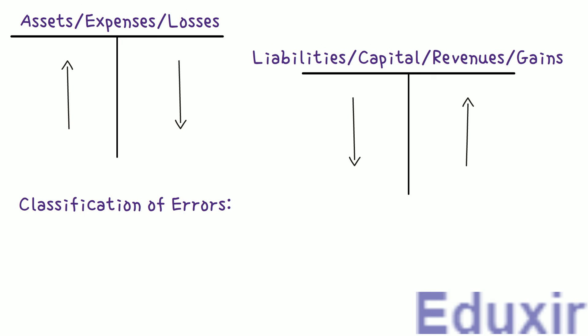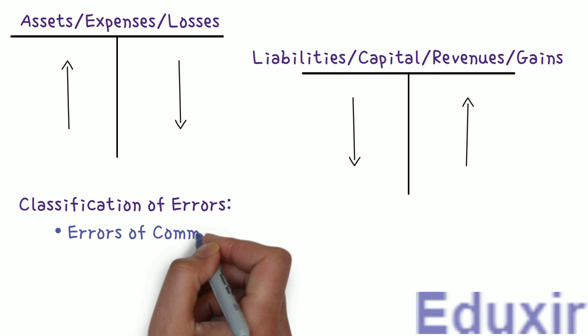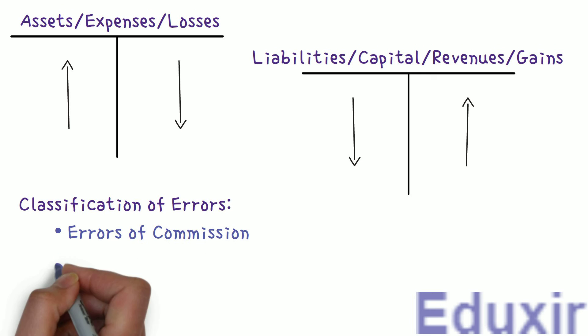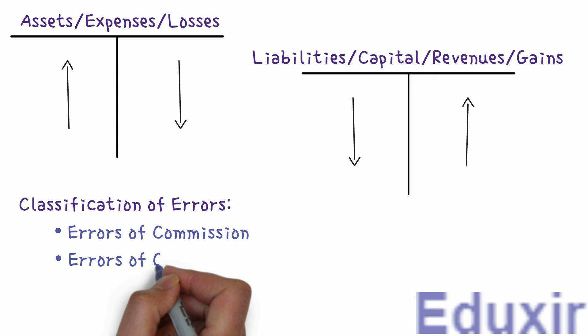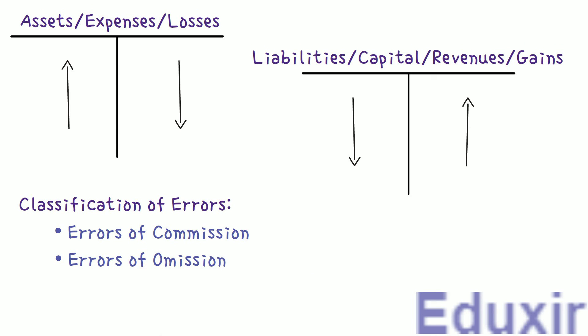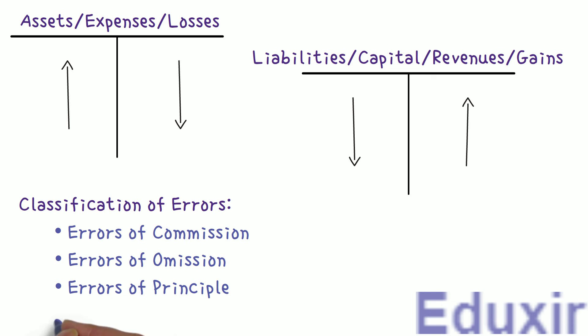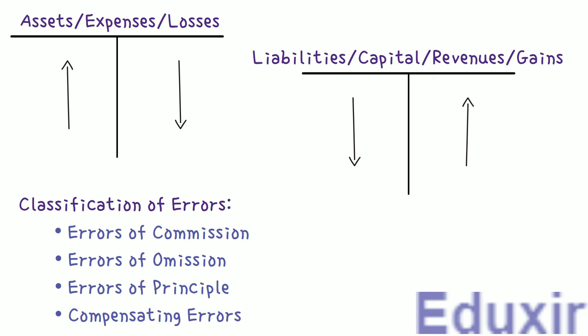Based on nature of the errors in accounting, all the possible errors can be classified into: Errors of Commission, Errors of Omission, Errors of Principle, and Compensating Errors. We have already discussed errors of commission and omission in previous problems. As we have to deal with errors of principle in this problem, let us discuss it further.